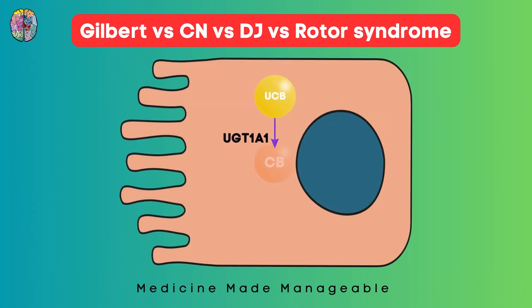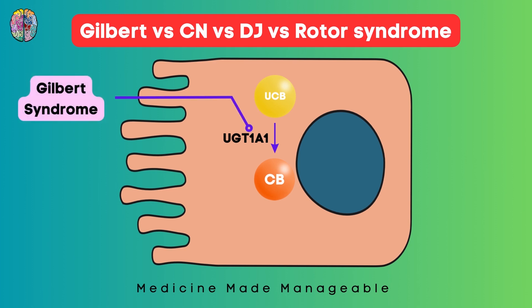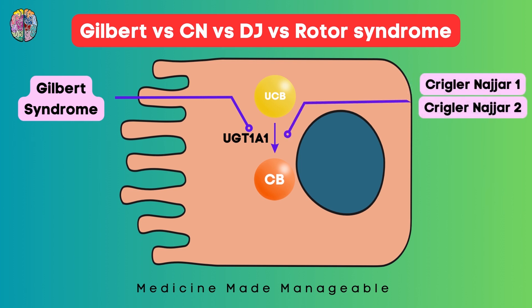Now let's compare all four syndromes. I have already made a detailed video on all four syndromes covering symptoms and diagnosis, so I highly recommend checking that out — this video is just a quick summary. If there is a mutation in UGT1A1, it leads to Gilbert syndrome. A more severe form, where UGT1A1 is also affected, is Crigler-Najjar syndrome, which is divided into type 1 and type 2, with type 1 being more severe.